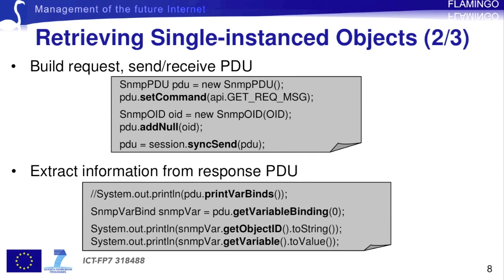The responsePDU now contains the value field in the variable bindings associated with the MIB object we requested, so we need to extract this information. The printVarBinds method, which is commented out, will return a string of all variable bindings. In this case, the OID and the associated value would be printed out as a single string; however, we could separate the two.